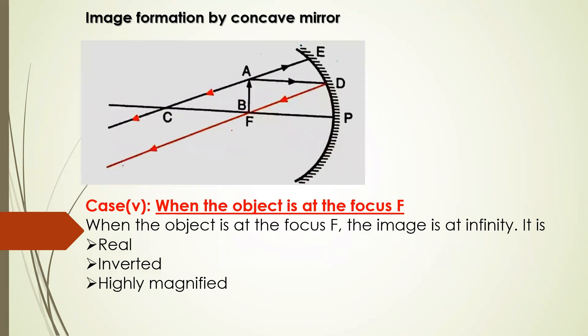Now we can move on to the next case when the object is at the focus. We are moving closer and closer to the mirror. At least two rays are required for image formation. I have taken the ray passing through the center of curvature of the concave mirror — as we studied, it retraces the path. If you observe, we are not able to see the image close by anywhere. The two reflected rays look parallel, and when the rays are going parallel, it is assumed that they will meet at infinity.